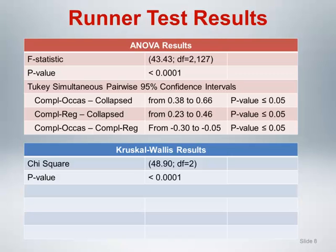Let's examine the runner test results for both the analysis of variance and Kruskal-Wallis. Starting with the analysis of variance results, the p-value for the overall null hypothesis simultaneously comparing all means is generated from what is called an F-statistic. Note that the F-statistic has two sets of degrees of freedom associated with it, generally referred to as the numerator degrees of freedom and denominator degrees of freedom, here equal to 2 and 127 respectively. The p-value for the ANOVA test is less than 0.0001, which is statistically significant and provides evidence that there are differences among the three runner groups.